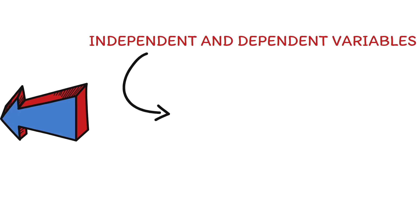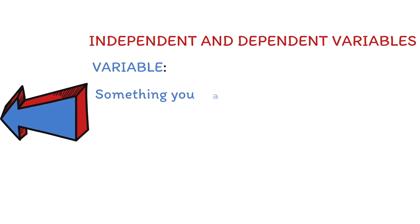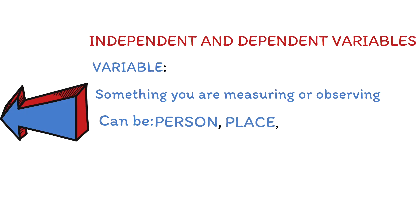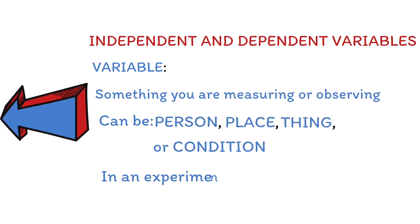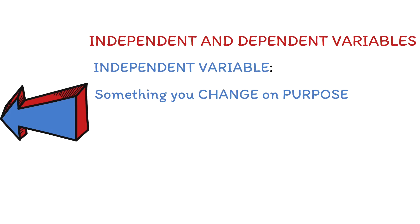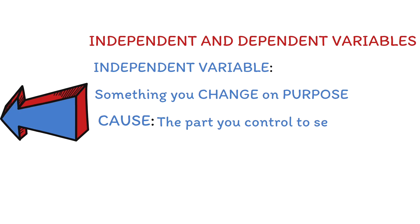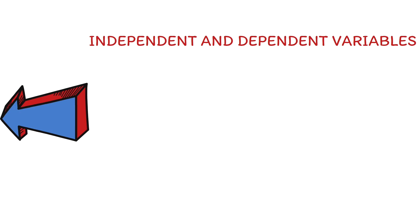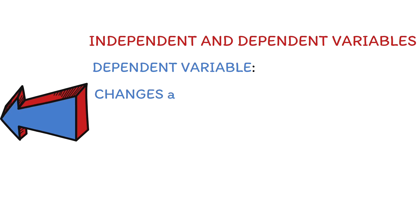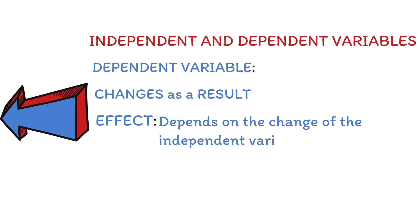This question tests your ability to identify independent and dependent variables, then explain or choose how the two variables are related. A variable is something you are measuring or observing — it can be a person, place, thing, or condition in an experiment or study. An independent variable is what you change on purpose; it's the cause, the part you control to see how it affects something else. A dependent variable is what changes as a result — it's the effect, and it depends on what you changed in the independent variable.